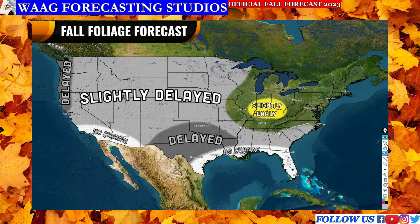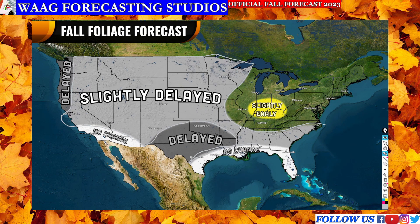Much of the United States falls into the slightly delayed region — outlined in light gray. Similar to how slightly early meant one to two weeks earlier, this may be one to two weeks later. It's a rough estimate, not an exact date. This delay is expected simply because of the conditions so far — a lot of these areas have experienced drier conditions since spring and warmer conditions overall. Fall foliage needs those cool crisp nights and cooler conditions to kick in, and right now we don't really have that, so it could be slightly delayed until those conditions arrive.